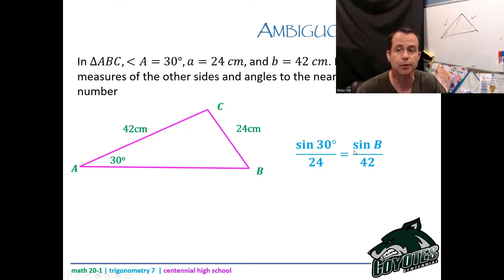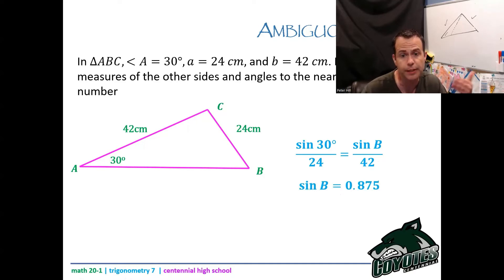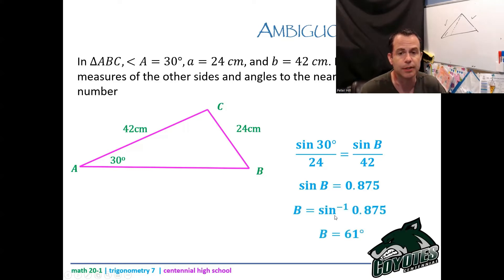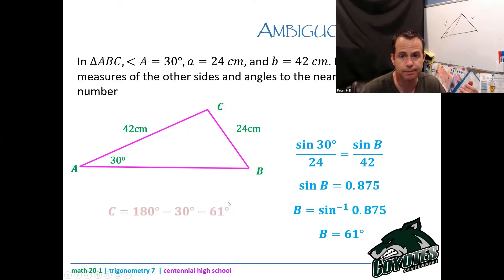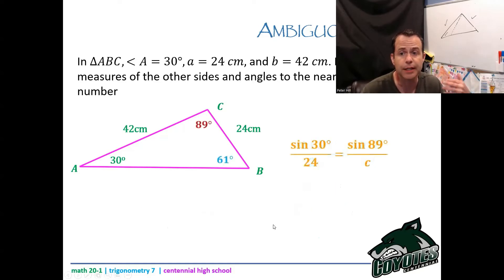Cross-multiplying: sine of 30 degrees times 42 divided by 24 gives me the sine of B. Then I take the inverse sine of 0.875 to get B equals 61 degrees. Now that I have B as 61 degrees, I can get C because I can go 180 minus 30 minus 61, giving me angle C equals 89 degrees. Then I'll get length c by doing another sine law: sine of 30 over 24 equals sine of 89 over length c, and cross-multiply to solve.